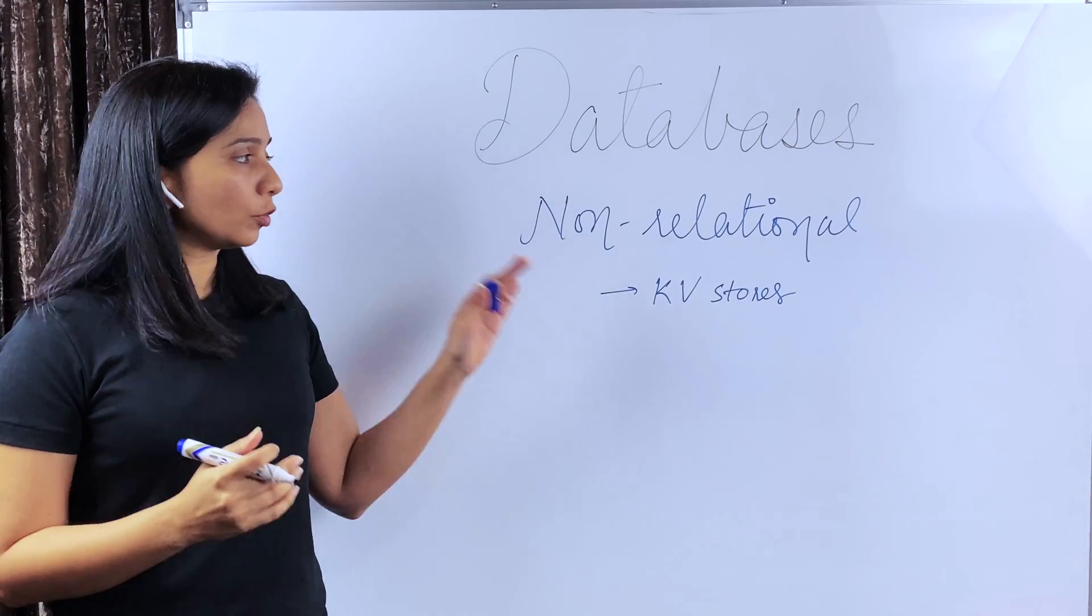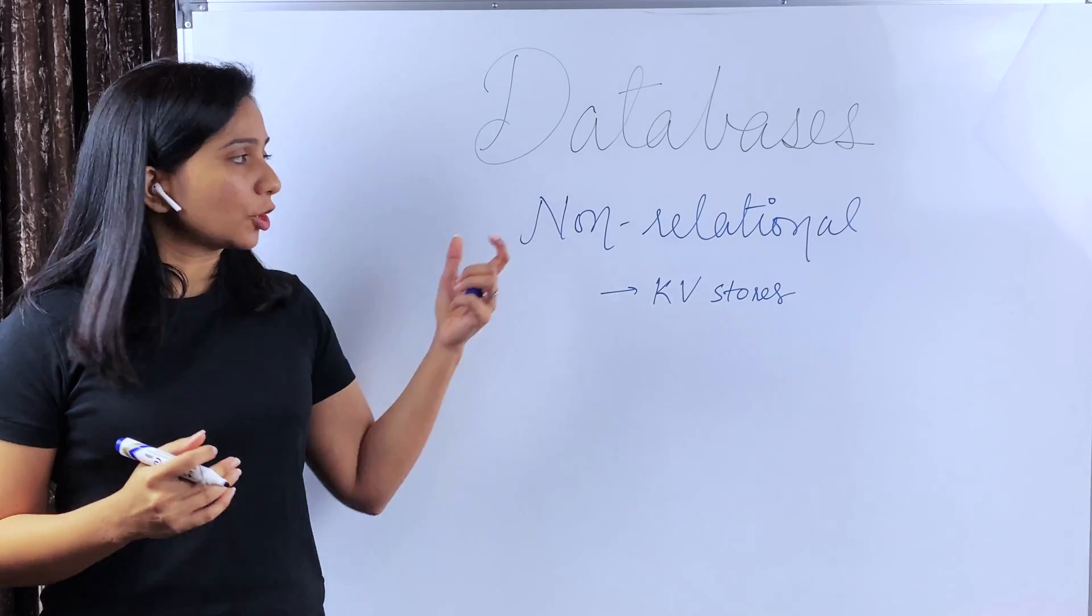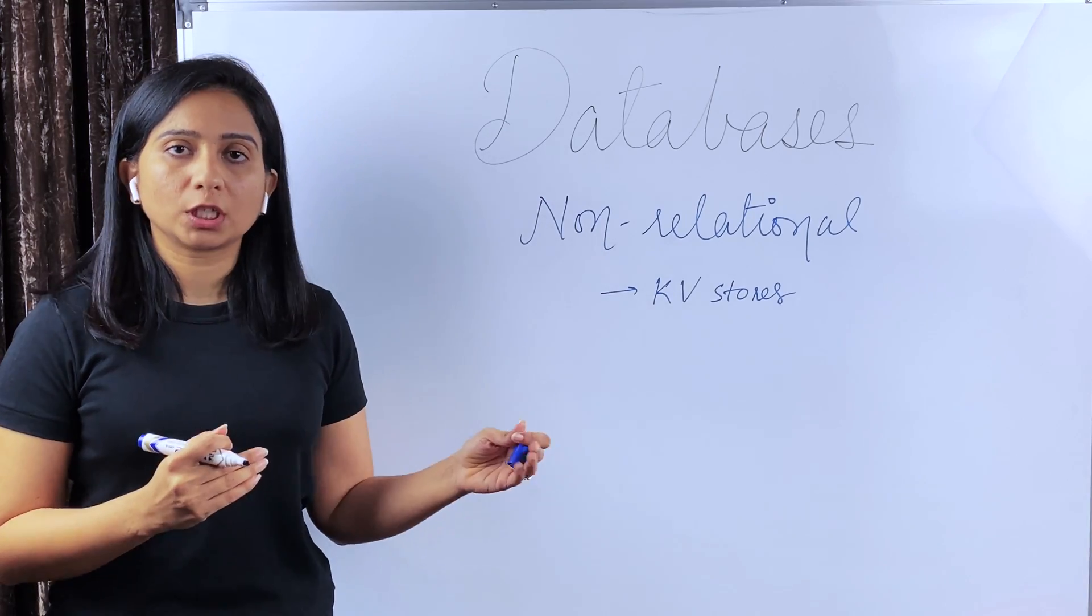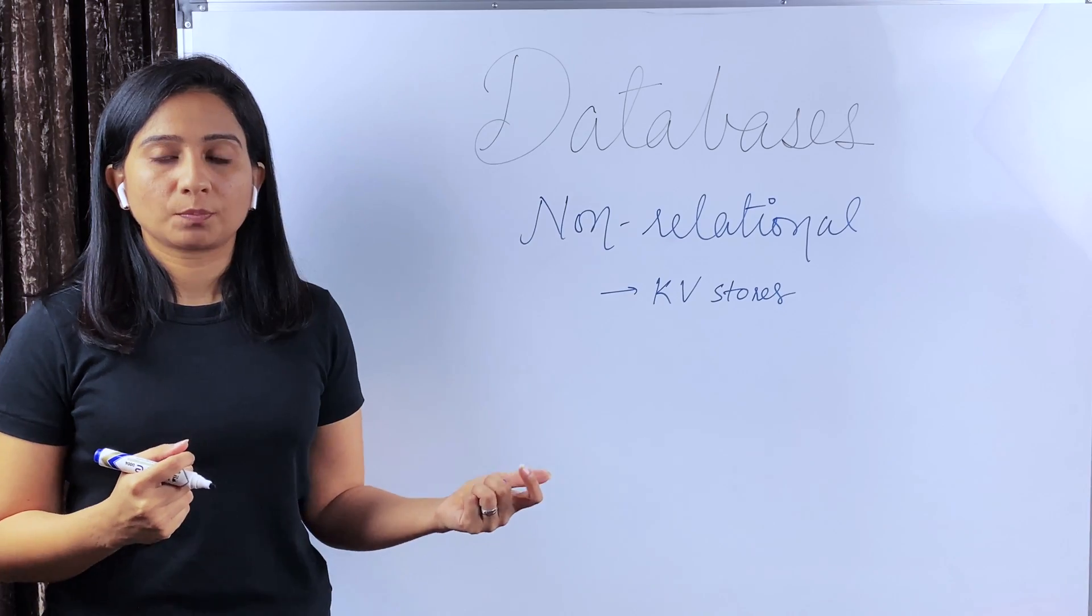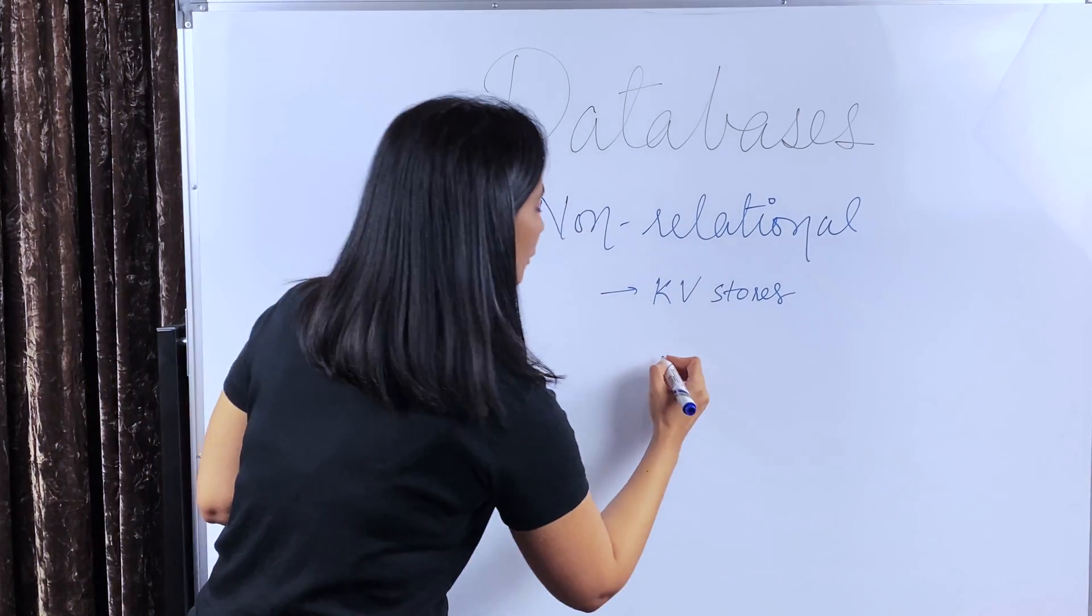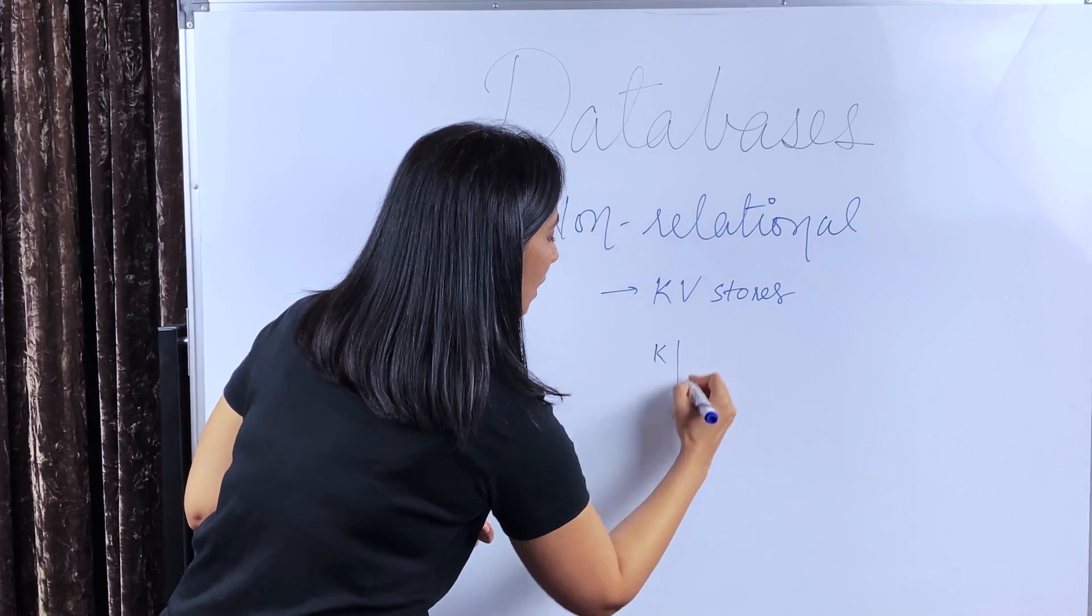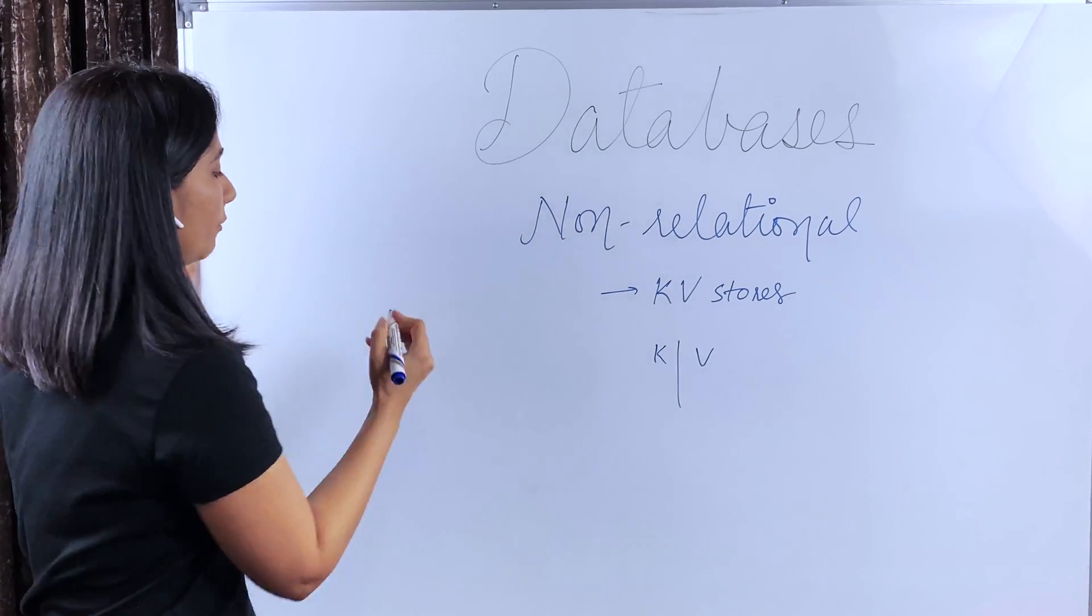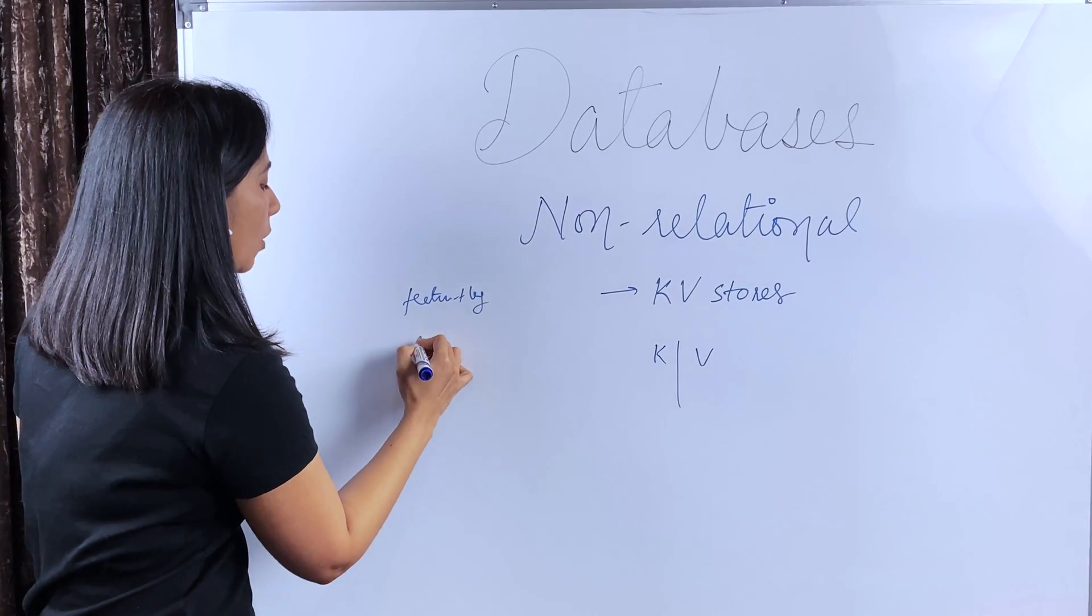Now let's talk about non-relational DBs or sometimes known as NoSQL DBs. In such databases, the schema is not fixed and different types of non-relational DBs cater to different requirements. Let's first talk about key value stores. Key value stores have just like a hash map. It will just have a key and a value.